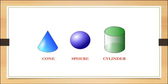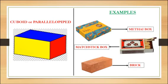Let's start with our first shape: cuboid or parallelepiped. Now students, look at here. These are the examples: mithai box, matchstick box, bricks. Such shapes are known as a cuboid shape or parallelepiped. Now let's see how many edges, corners, and faces does cuboid have.